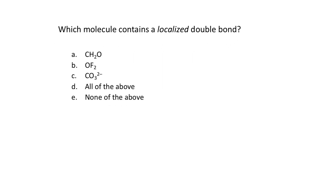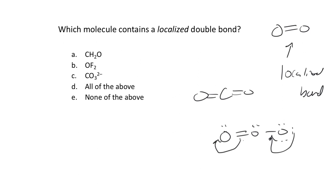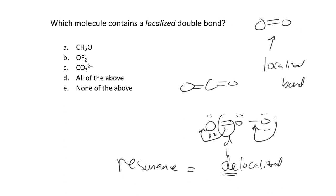A localized double bond is just a normal double bond — exactly where you think it is. O2 has a localized double bond; carbon dioxide has localized double bonds. When we see ozone, we call it a delocalized bond — meaning spread across multiple centers, not localized to always be between those two atoms. Delocalized bonding comes through resonance, so resonance equals delocalized bonding.